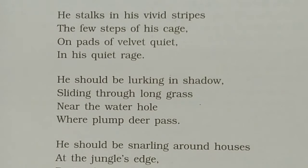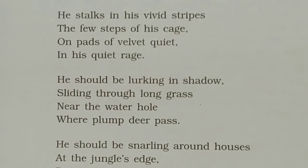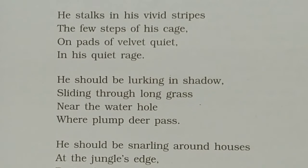In the first stanza, the poet is describing a tiger in a cage. The tiger with bright and clear stripes moves inside the cage. The cage is very small so the tiger can hardly take a few steps along its length. His pads are soft like velvet, so no one can hear the sound of his footsteps. In spite of being the most powerful creature, he is imprisoned inside a cage.